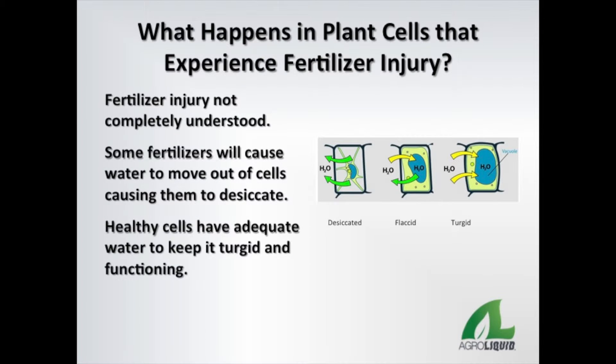Plant injury from fertilizer is not completely understood. It is known, however, that some fertilizers cause the water in the plant cells to move out of those cells, causing desiccation and death. That is described in the cell on the left side of the diagram. A fertilizer component that can cause this is chlorine. As you recall, chlorine is one of the components of muriate of potash, or 0-0-60. Healthy cells have a positive influx of water that keeps them turgid and physiologically functioning.